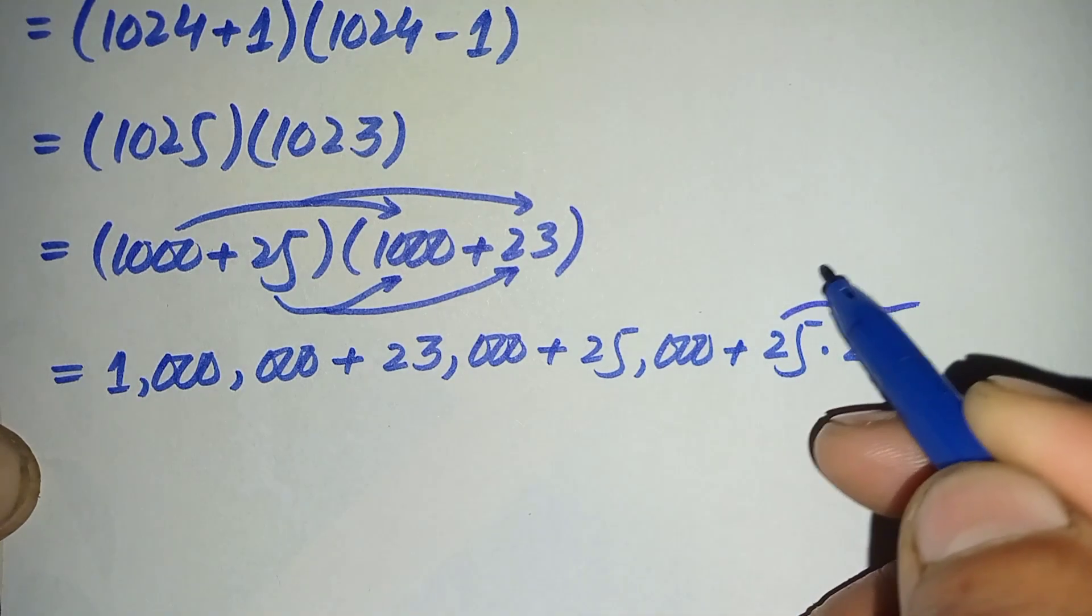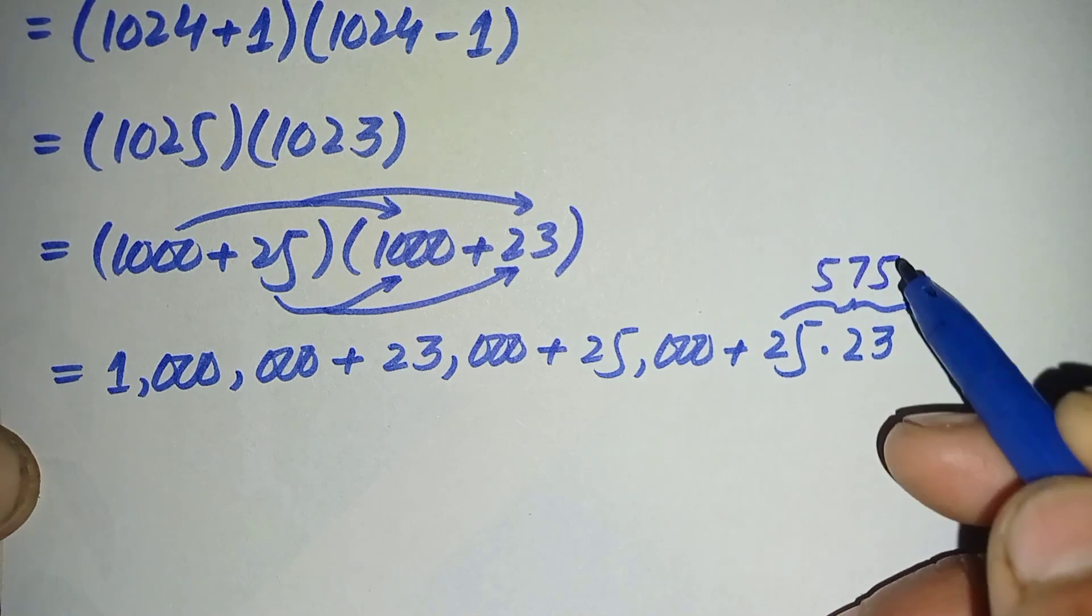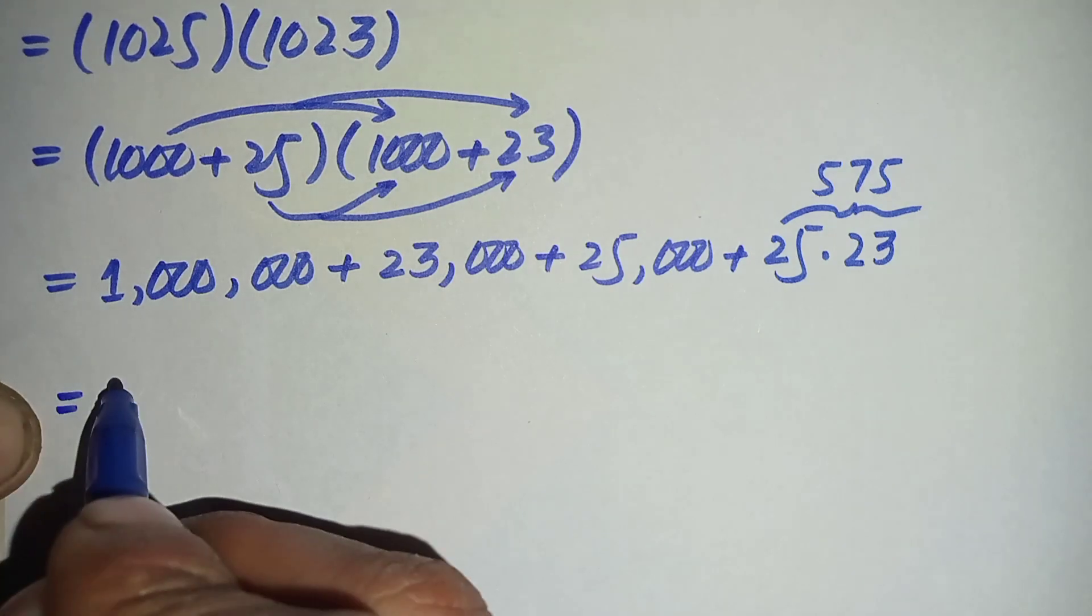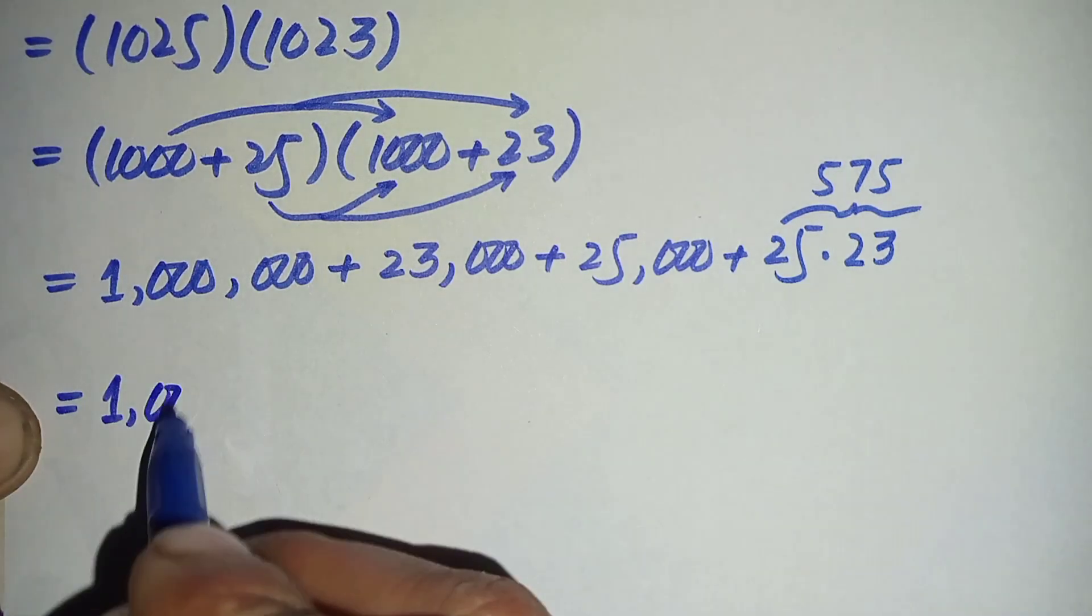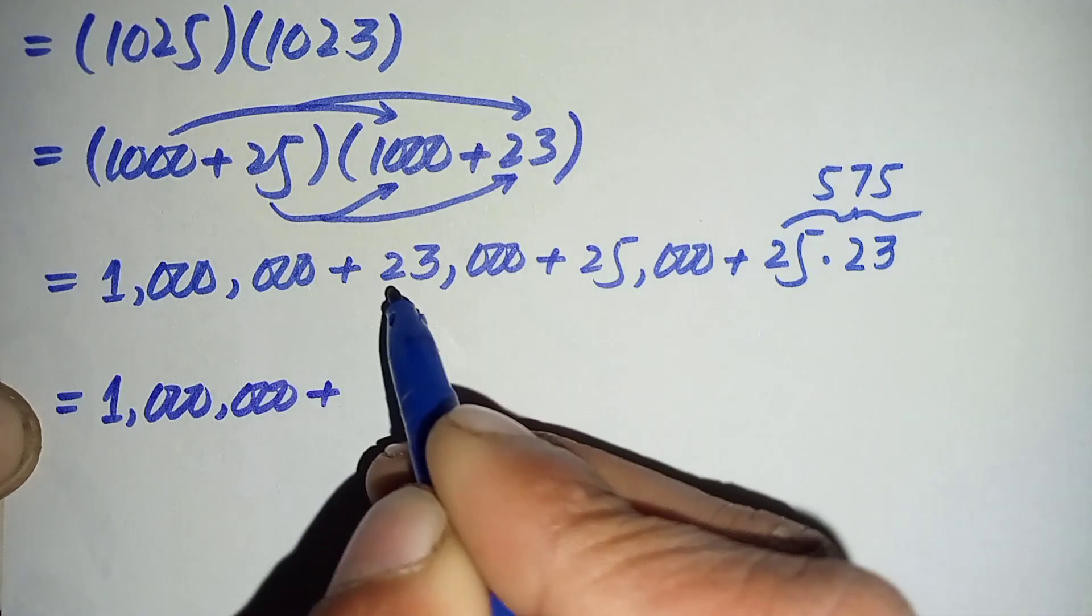Now let's further simplify this equation. Here 1 million plus, you will add these two numbers, 23,000 plus 25,000 is 48,000, plus their product is 575.